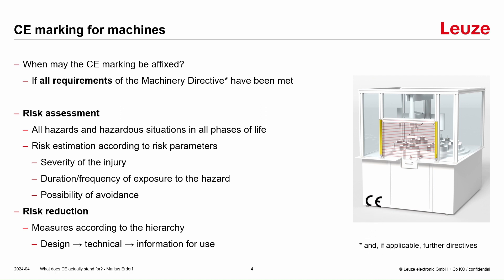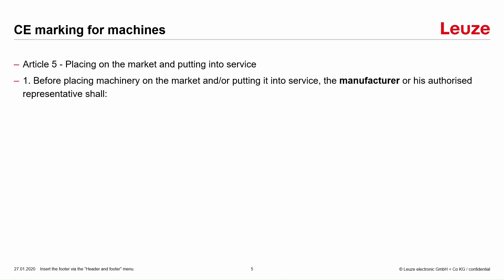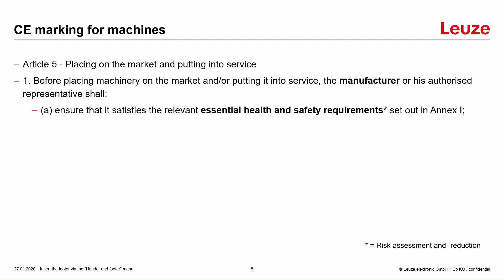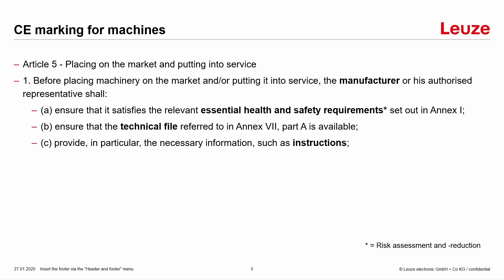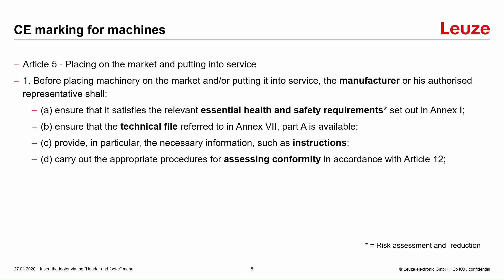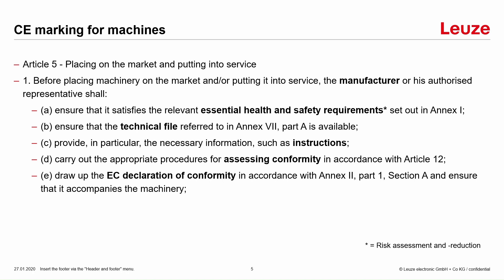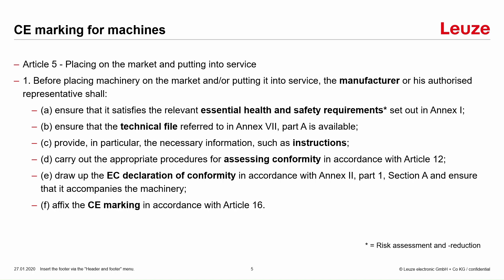Then we are allowed to do the CE marking. If we look directly into the machinery directive, we find this information in Article 5. It states the manufacturer has to ensure that all essential health and safety requirements have been met — that means the risk assessment and risk reduction. Then there are further steps: we need the technical files, the instructions, the conformity assessment, and the EC declaration of conformity. In the last step we affix the CE marking on the machinery.